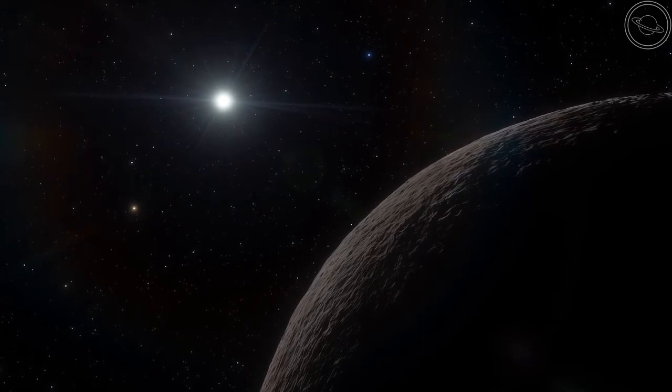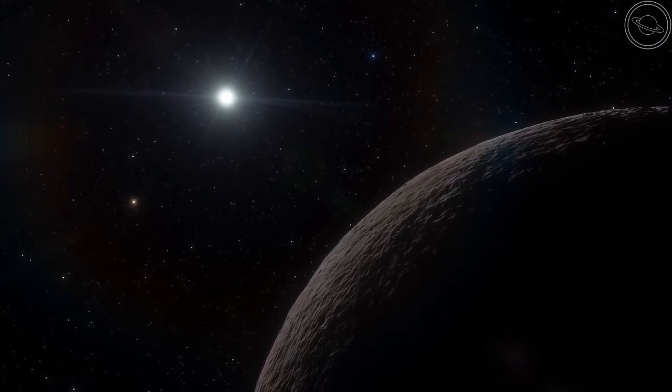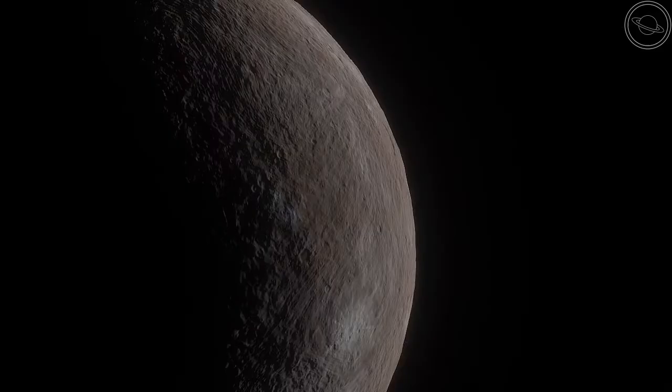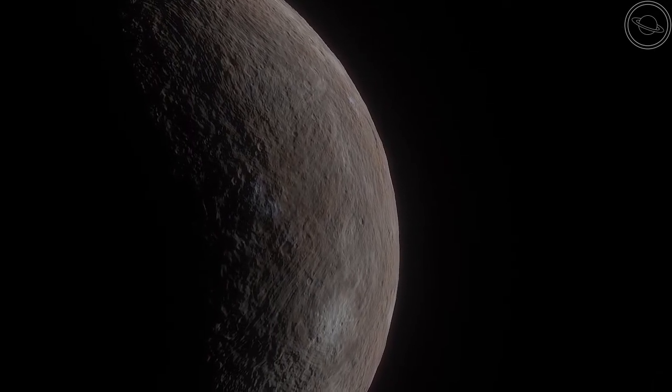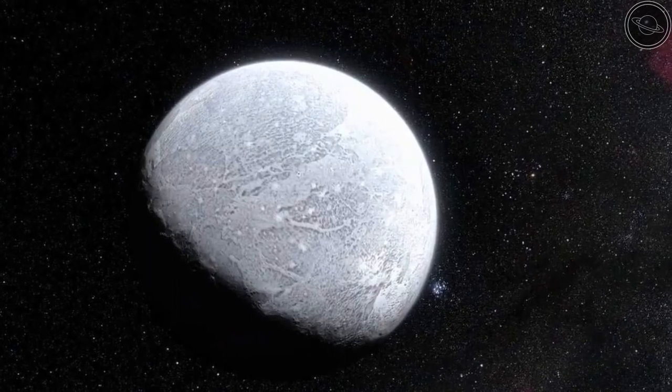It wasn't until Eris was discovered that scientists truly had to reconsider the criteria for a planet. Eris is practically the same size as Pluto, differing by only 50km in diameter. If Pluto was a planet, then why not Eris?